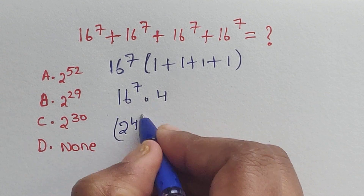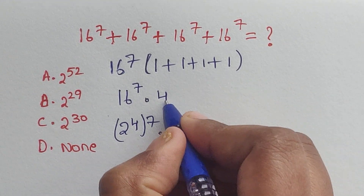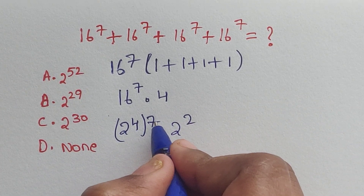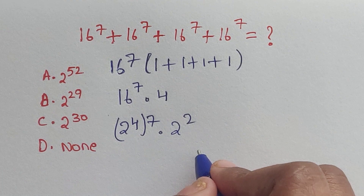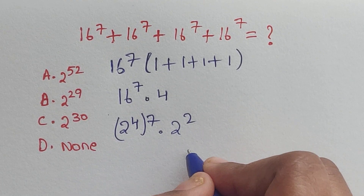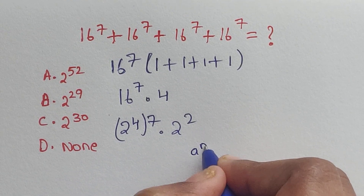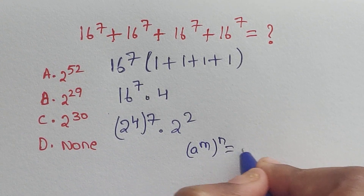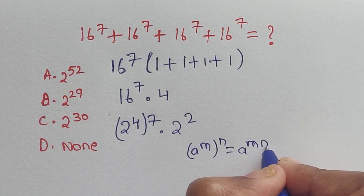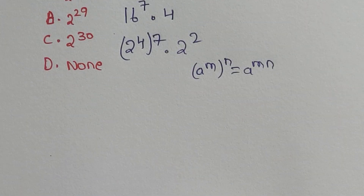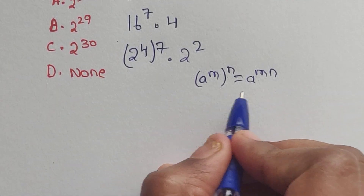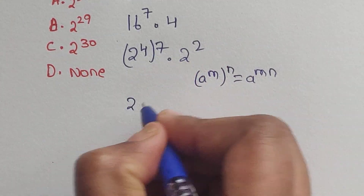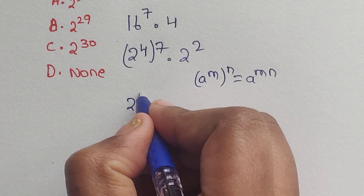Now 16 can be written as 2 to the power of 4, whole to the power of 7, and 4 can be written as 2 to the power of 2. We apply the formula: (aᵐ)ⁿ = aᵐⁿ. So we multiply the exponents: 2 to the power of 4 times 7, which equals 2 to the power of 28.